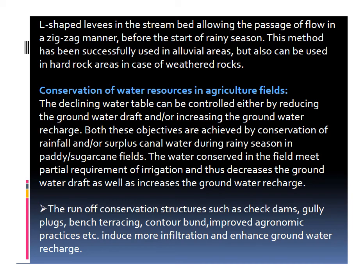The next method is conservation of water resources in the agriculture field itself. The declining water table can be controlled either by reducing groundwater extraction or by increasing groundwater recharge. Both these objectives are achieved by conservation of rainfall or surplus canal water during the rainy season. In paddy and sugarcane fields, the conserved water meets partial irrigation requirements, thereby decreasing groundwater extraction and increasing groundwater recharge. Runoff conservation structures such as check dams, gully plugs, bench terracing, contour bunds, and good agronomic practices induce more infiltration and enhance groundwater recharge.